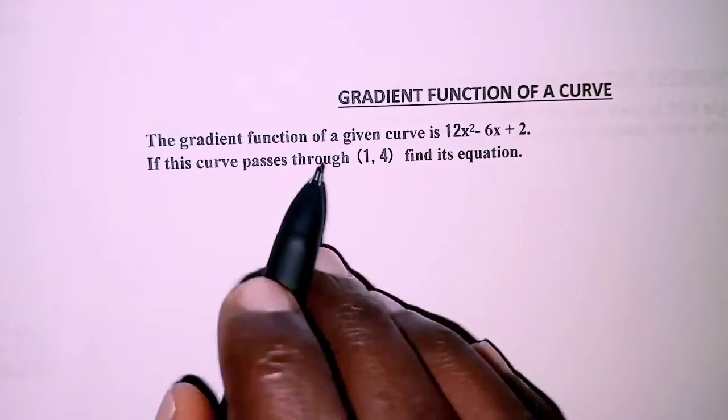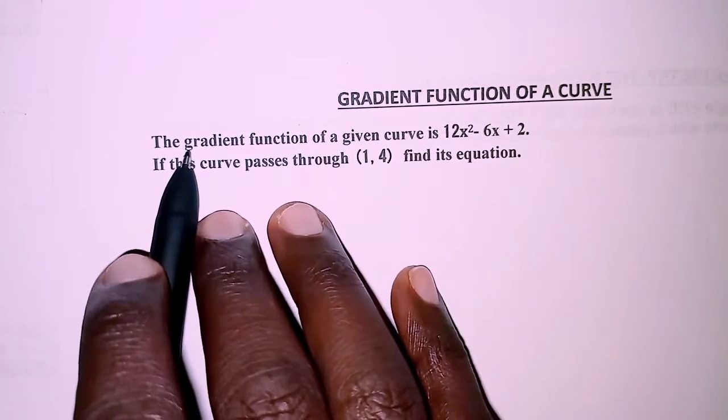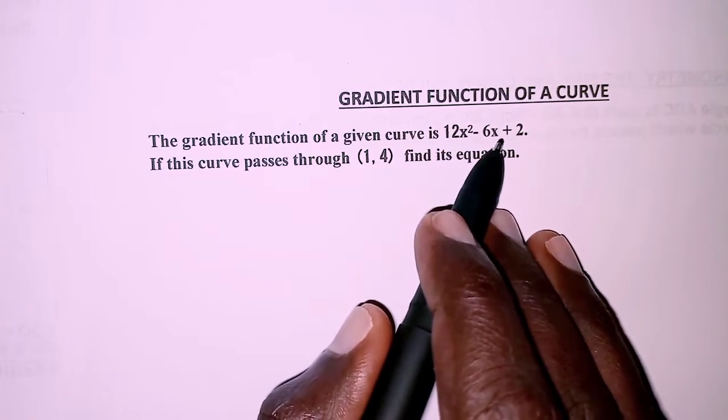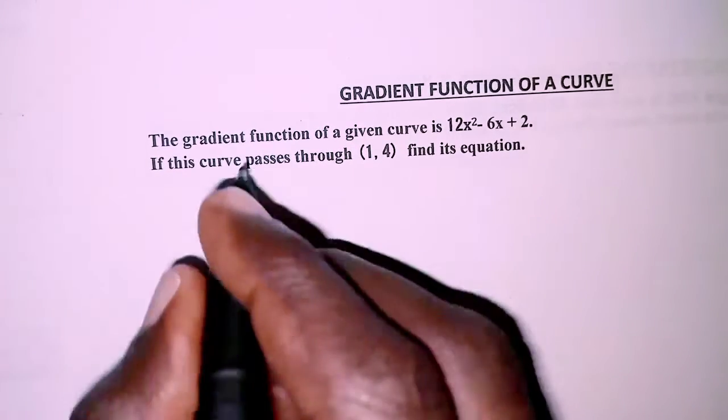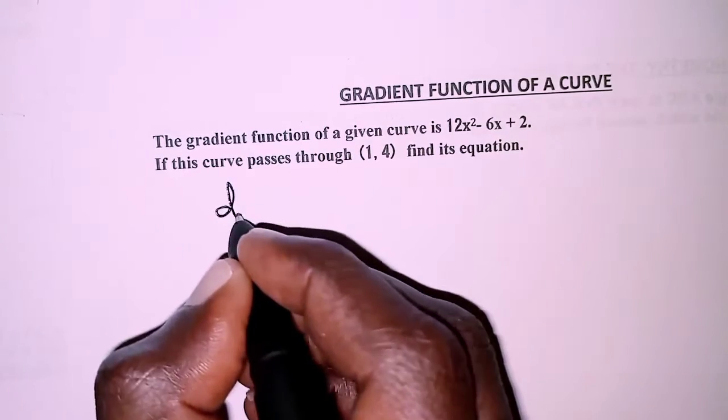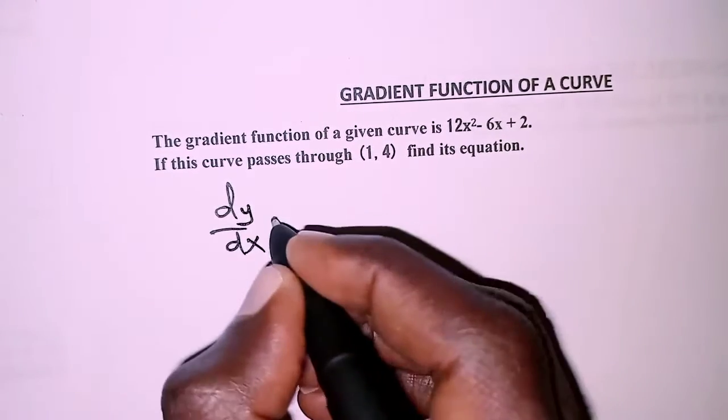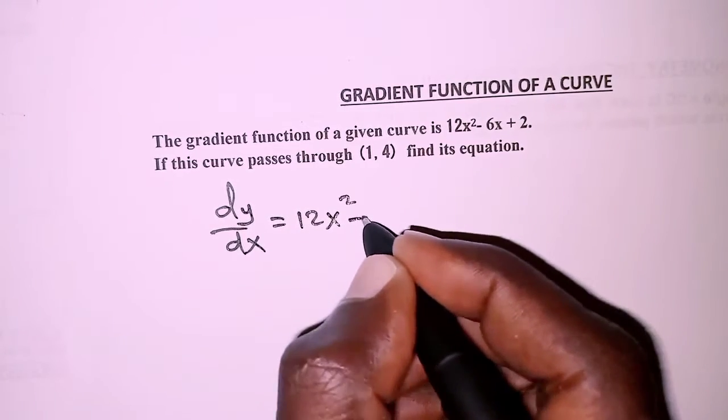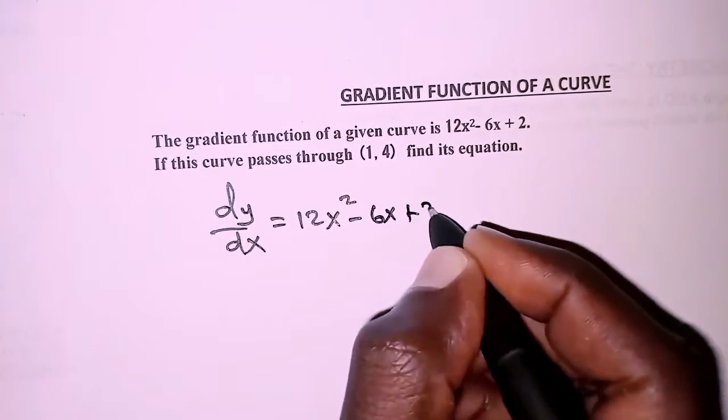As we see in the equation, we're given the gradient function as 12x² - 6x + 2. The gradient function is dy/dx, and that is given as 12x² - 6x + 2.